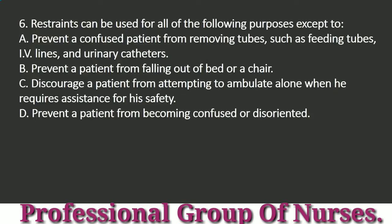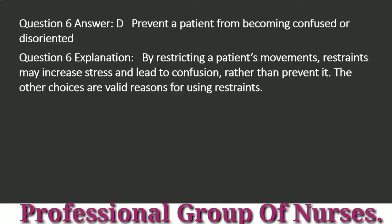Question 6: Restraints can be used for all of the following purposes except to: a. Prevent a confused patient from removing tubes, such as feeding tubes, IV lines, and urinary catheters. b. Prevent a patient from falling out of bed or a chair. c. Discourage a patient from attempting to ambulate alone when he requires assistance for his safety. d. Prevent a patient from becoming confused or disoriented. Answer: d. Prevent a patient from becoming confused or disoriented. Explanation: By restricting a patient's movements, restraints may increase stress and lead to confusion, rather than prevent it. The other choices are valid reasons for using restraints.